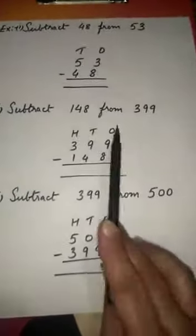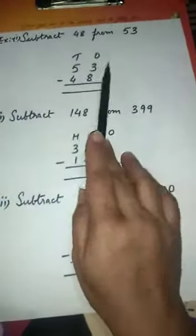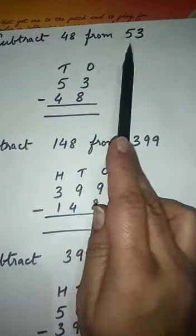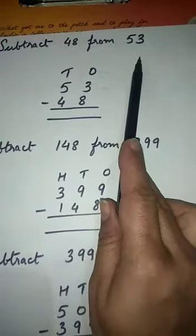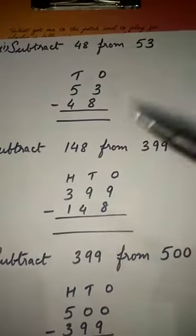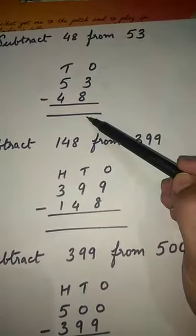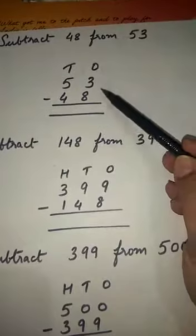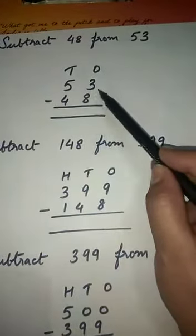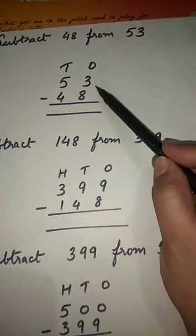Now here are some sums. We will subtract 48 from 53. First, we have to write the bigger number on top. Here 53 is the bigger number. You cannot subtract a bigger number from a smaller number, so we write 53 first, then 48. Be very careful to maintain the columns — the ones and tens. So we have 53 minus 48. In this sum you cannot subtract 8 from 3, as 8 is bigger than 3.